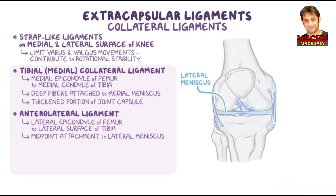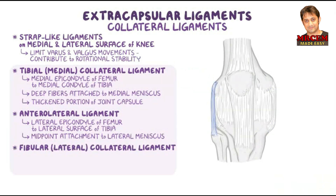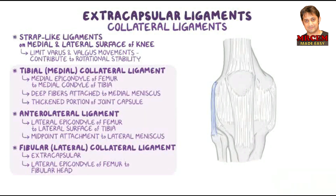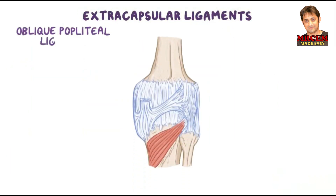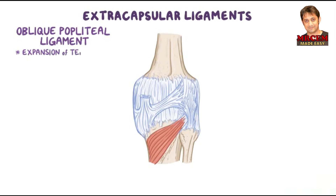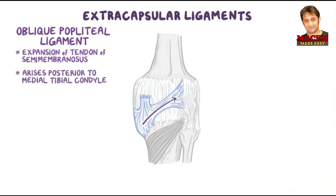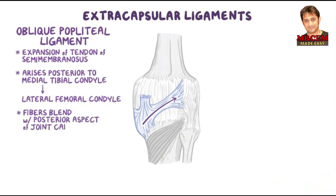The lateral or fibular collateral ligament is a cord-like extracapsular ligament that extends inferiorly from the lateral epicondyle of the femur to the lateral surface of the fibular head. Then there is the oblique popliteal ligament, which is an expansion of the tendon of the semimembranosus that reinforces the joint capsule posteriorly. The ligament arises posterior to the medial tibial condyle and passes superolaterally toward the lateral femoral condyle, blending with the central part of the posterior aspect of the joint capsule.